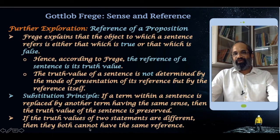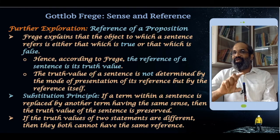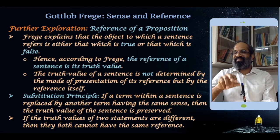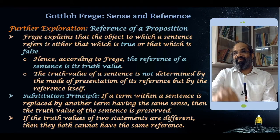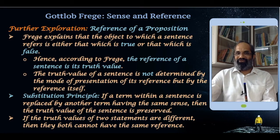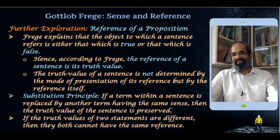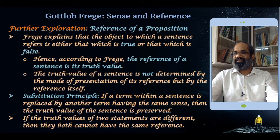Now, if the truth values of two statements are different, then they both cannot have the same reference. If the truth value of one statement and another differ, they cannot refer to the same object, because the truth value of the proposition is the object itself. So if the truth value differs, they cannot be one and the same object — the object must also differ. That is what Frege says: if the truth values of two statements are different, they both cannot have the same reference.